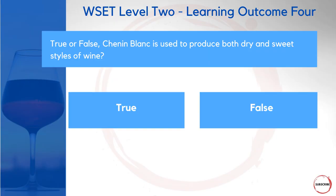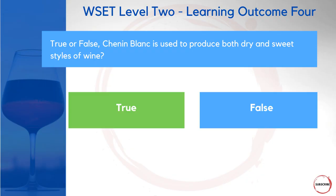We'll finish on a true or false question — it isn't always multiple choice. True or false: Chenin Blanc is used to produce both dry and sweet styles of wine. We had a question about Vouvray earlier. In the Loire Valley, you can find a number of different styles from Chenin Blanc: sparkling, dry, and sweet. It's an incredibly versatile grape, so the correct answer is true.